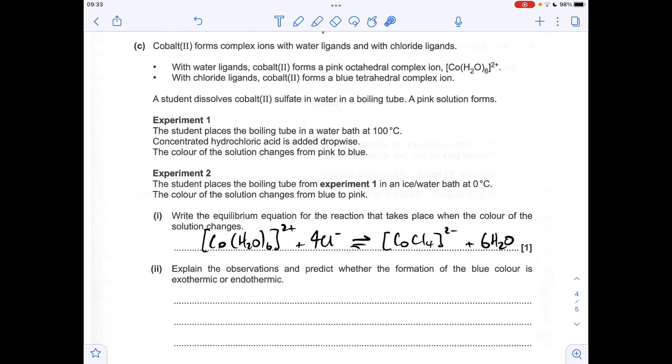Moving on to the final part of the question. So this is about transition elements and also equilibrium. So the equation, or the equilibrium equation, for the reaction that's taken place is this one here. So we're going from this octahedral complex, cobalt with six waters, to this tetrahedral complex with cobalt and four chloride ligands.